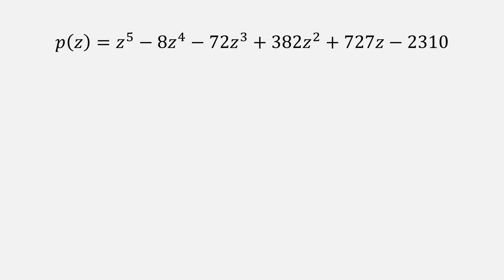Let's look at another example of z to the fifth minus 8z to the fourth minus 72z cubed plus 32z squared plus 727z minus 2310.